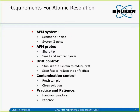Now let's talk about what requirements we need to meet to achieve atomic resolution. The first is the AFM system. We need a good AFM system. For the multimode, using the E-scanner or A-scanner is capable of atomic resolution because it has very low XY noise. Other systems like FastScan and ICON are also capable, as is the Innova system. The XY scanner noise is good enough for atomic resolution. We also need good Z system noise. In a good environment, all these systems can meet the atomic resolution requirement.